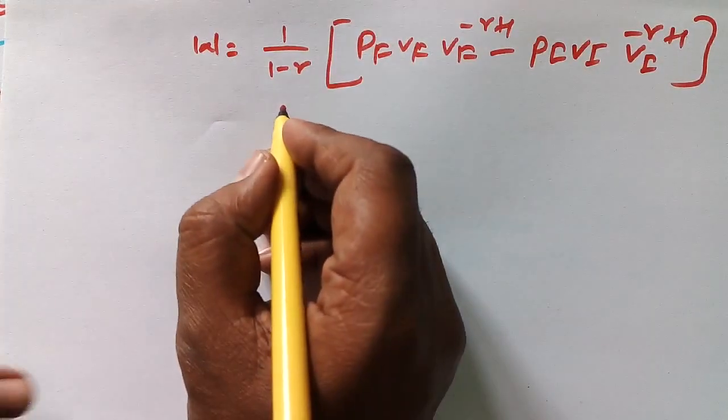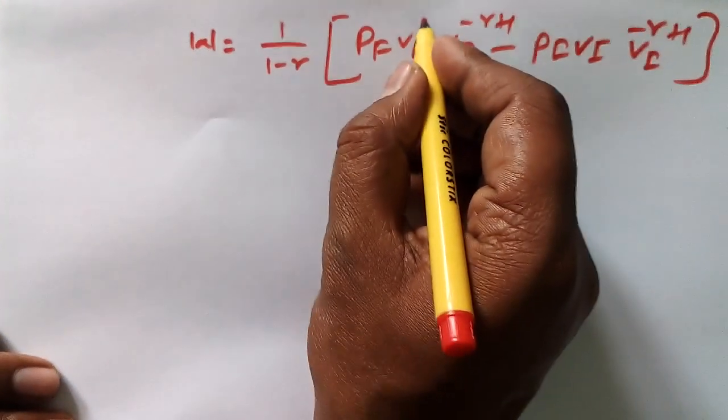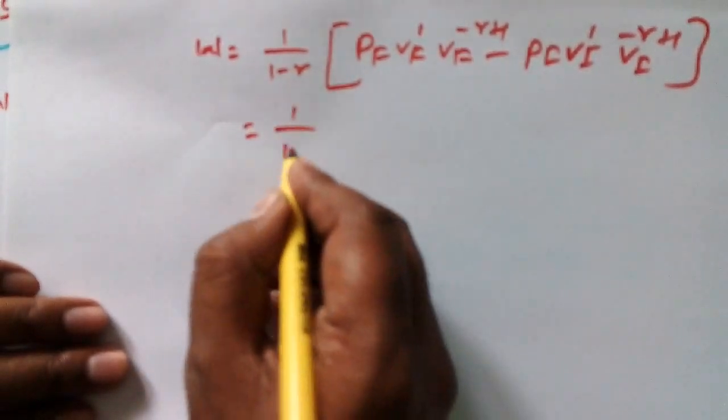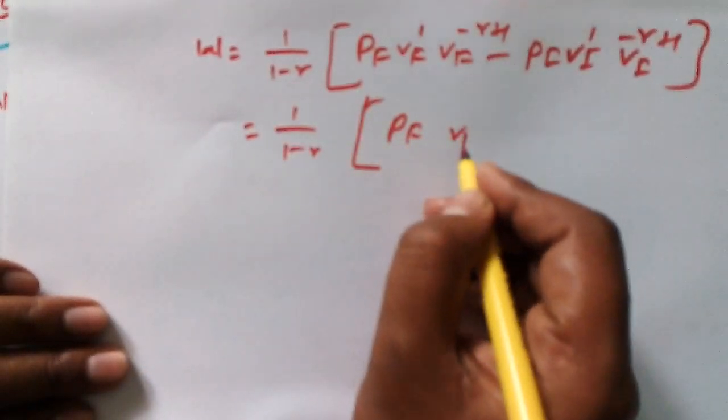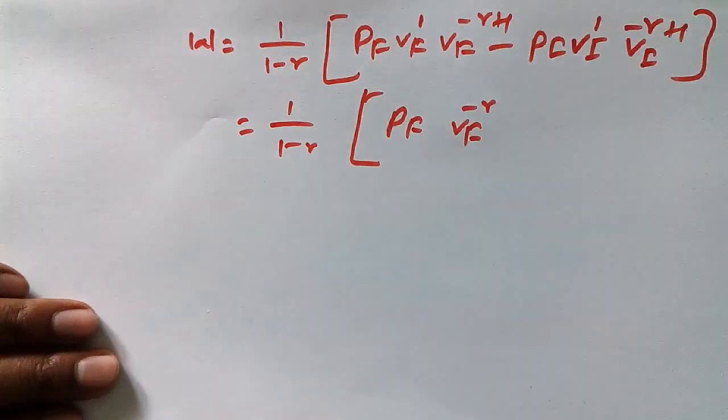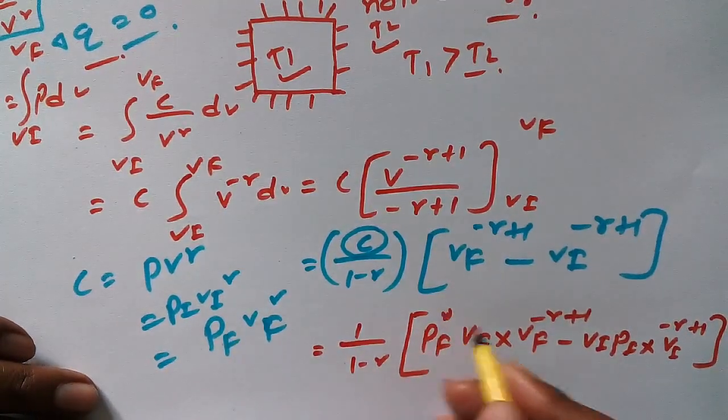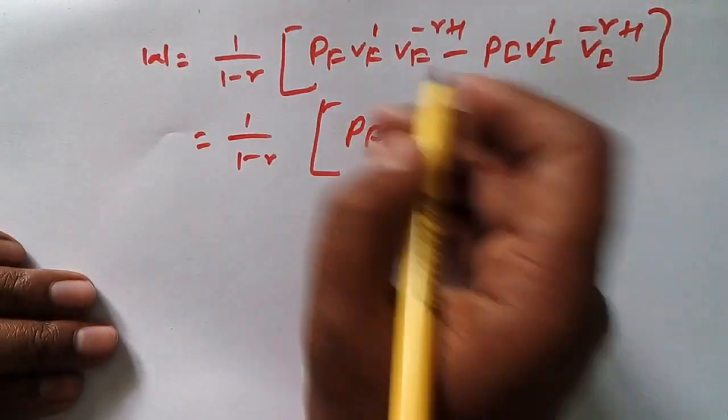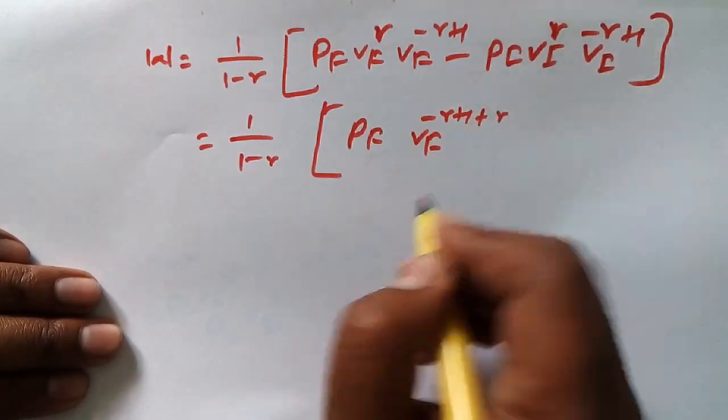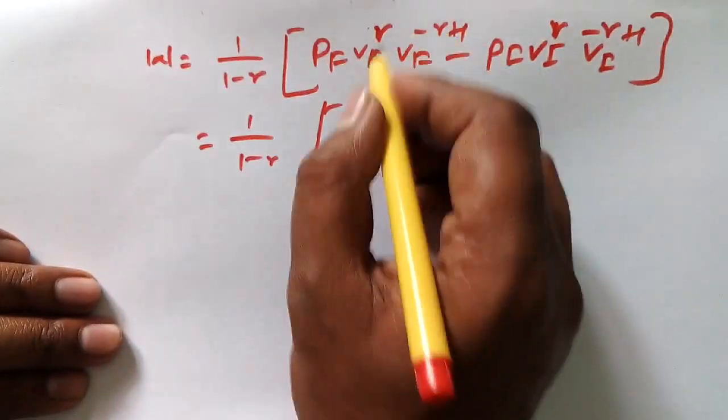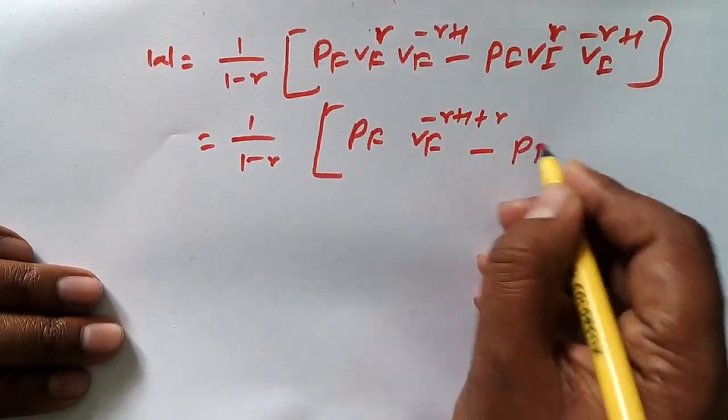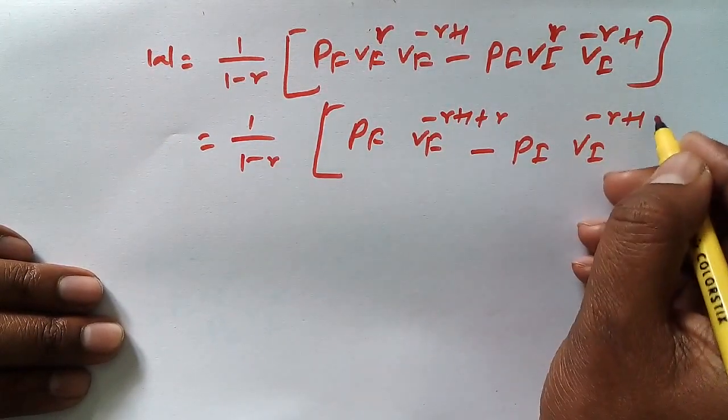What we got here: gamma minus 1. So we're having 1 here, and here also we're having 1. So 1 over 1 minus gamma, P_F V_F to the power gamma times V_F to the power minus gamma. So here we have gamma, and this one is also gamma. We have gamma gamma. Minus 1 plus 1, and then plus gamma because this will add here.